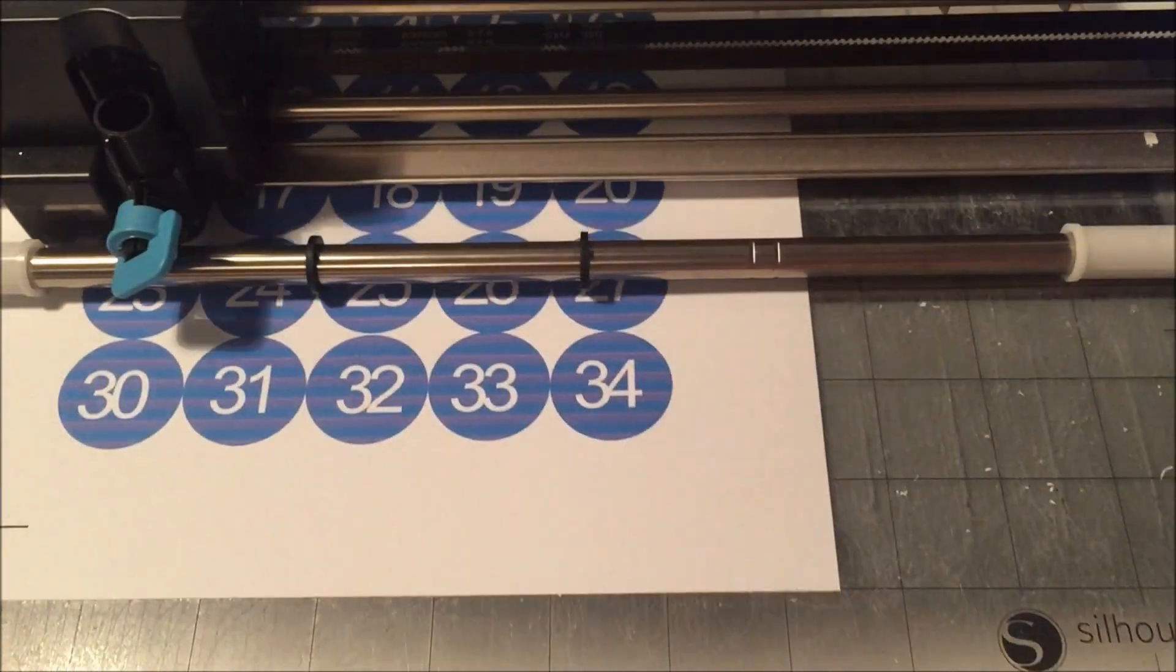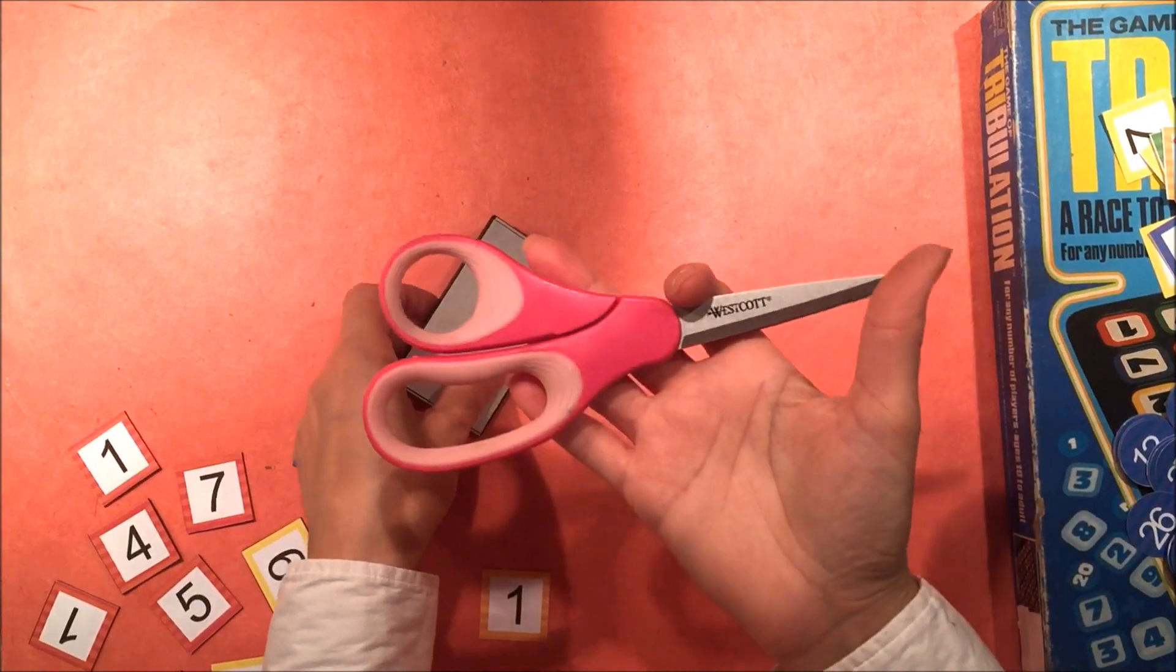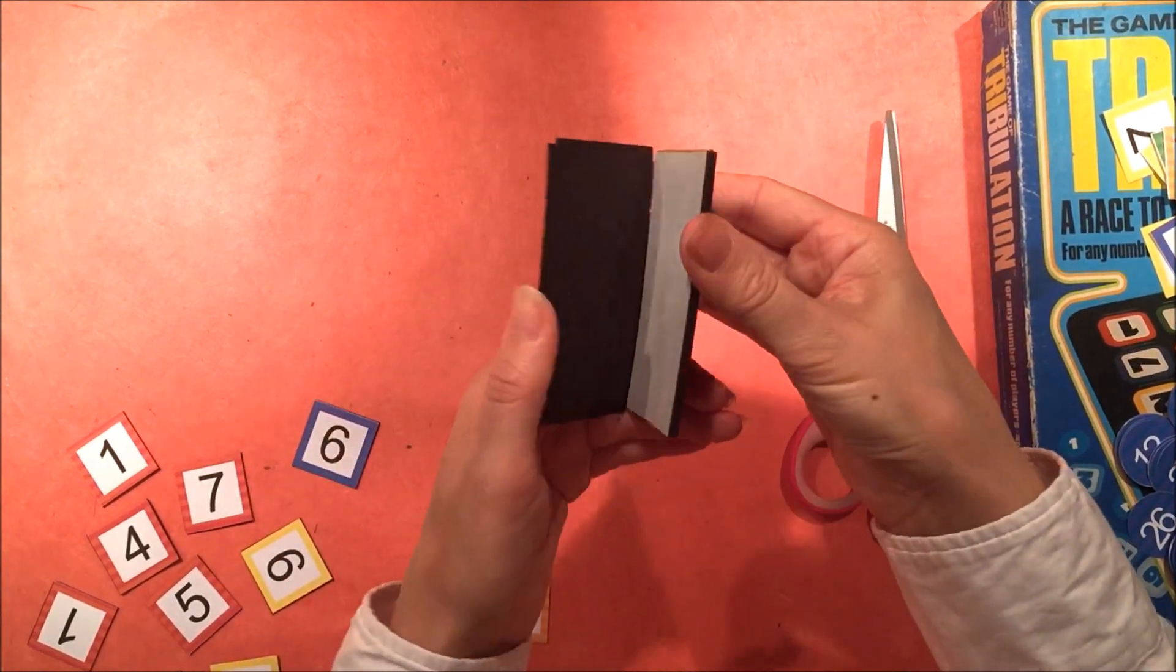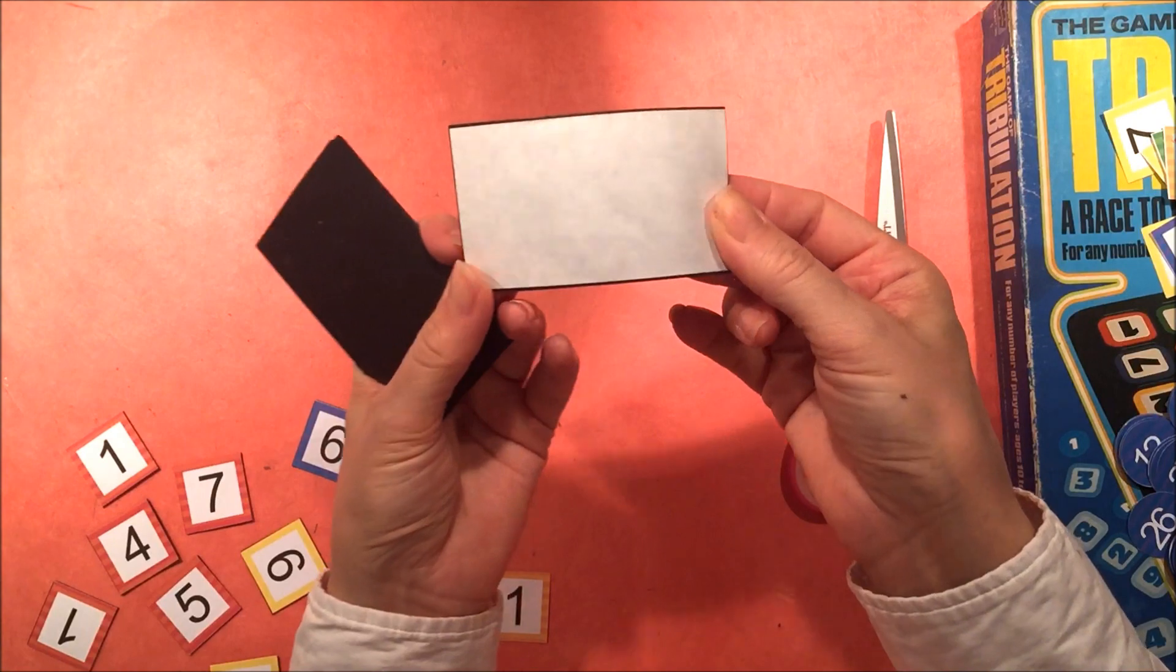So you need 49 blue tiles marked 1 to 50, actually, and then you need a variety of interior tiles, and you can check my blog for the details of how many of each number that you need.